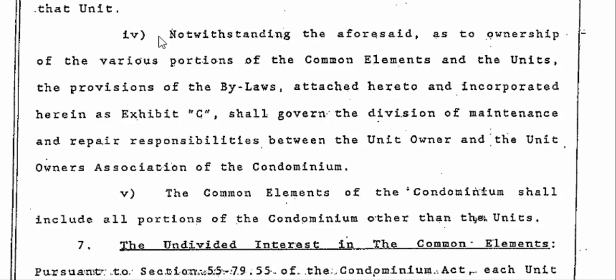This is one of the most important clauses — number four and five. Notwithstanding the aforesaid as to ownership of the various portions of the common elements and the units, the provisions of the bylaws attached hereto and incorporated herein as Exhibit C shall govern the division of maintenance and repair responsibilities between the unit owner and the unit owner's association of the condominium. That's very important because if you have a problem that arises that is not your fault and is not attached to your particular unit, then that would fall under the association — it is the association's responsibility to make the repairs. This is not a board decision. This is not something that gets voted on. This is a sanctified document registered with the Commonwealth of Virginia that states clearly who is responsible for that repair.